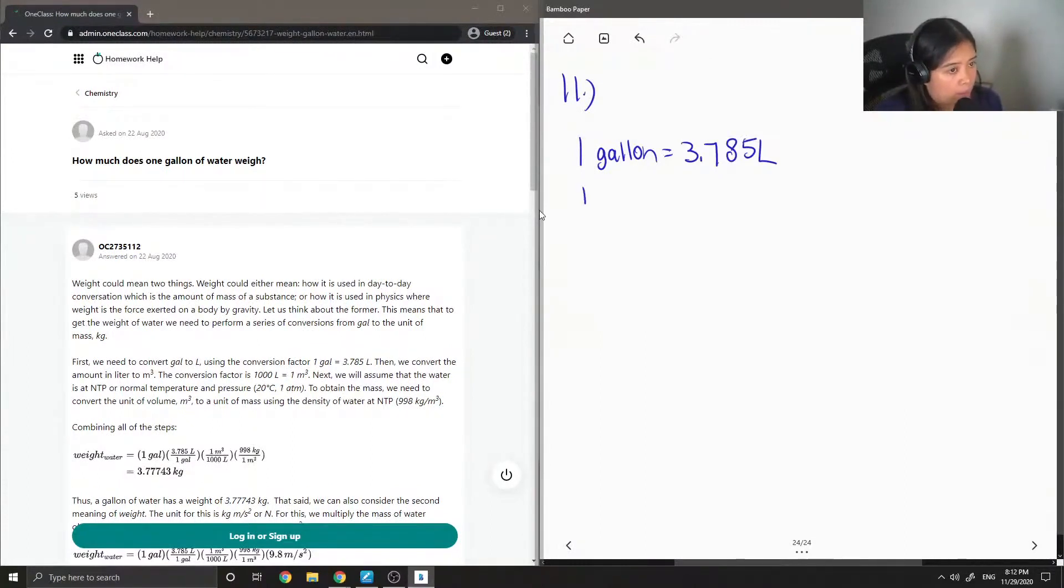And one liter is equal to 1000 milliliters. And also, gallons will be in the denominator, so now I want to convert my liters to milliliters. So now I'm going to put my milliliters in the numerator, so 1,000 milliliters over 1 liter.